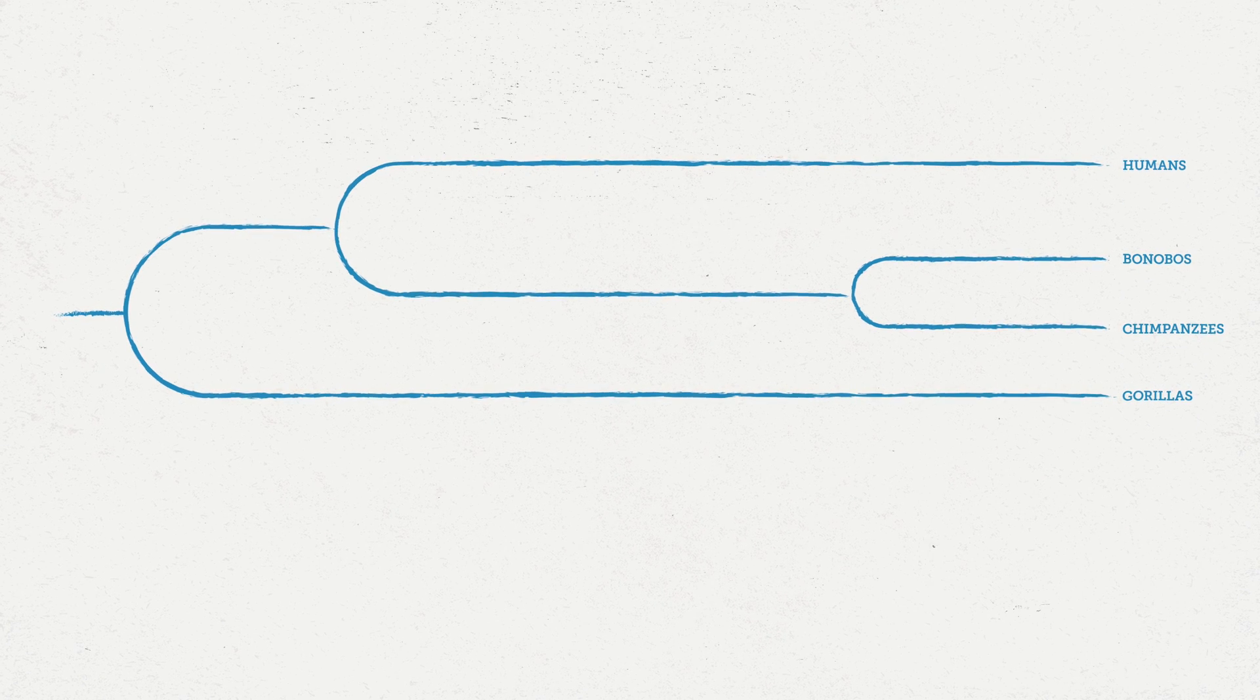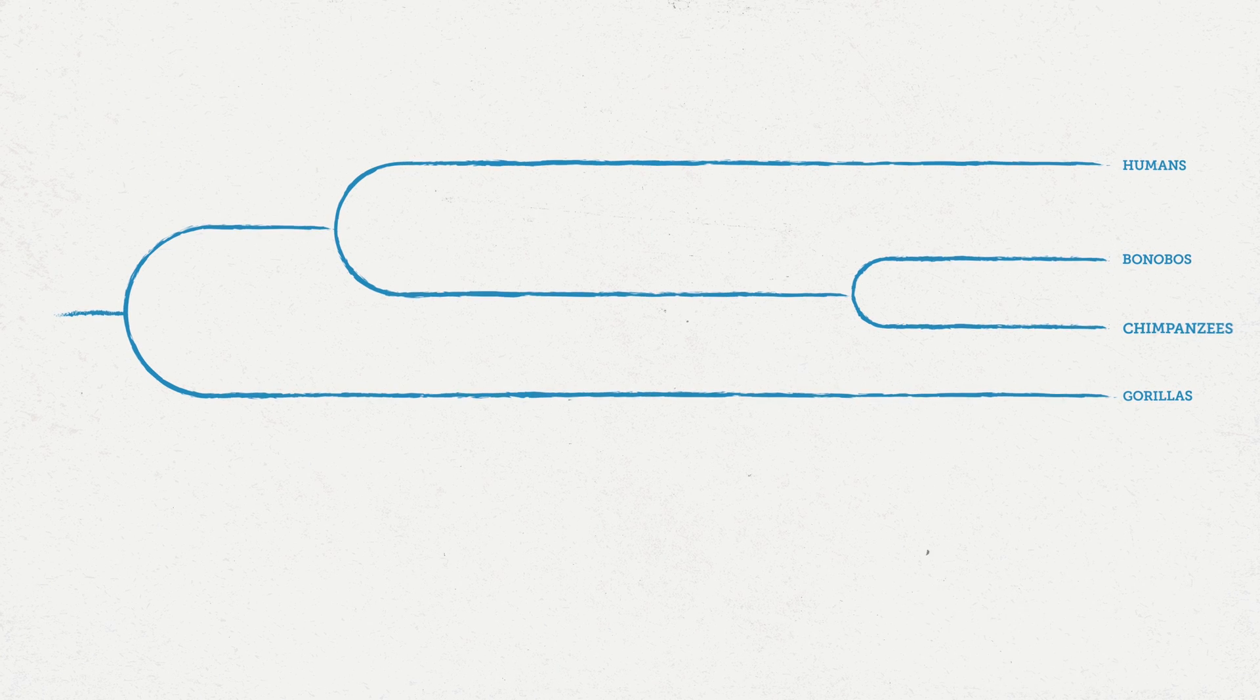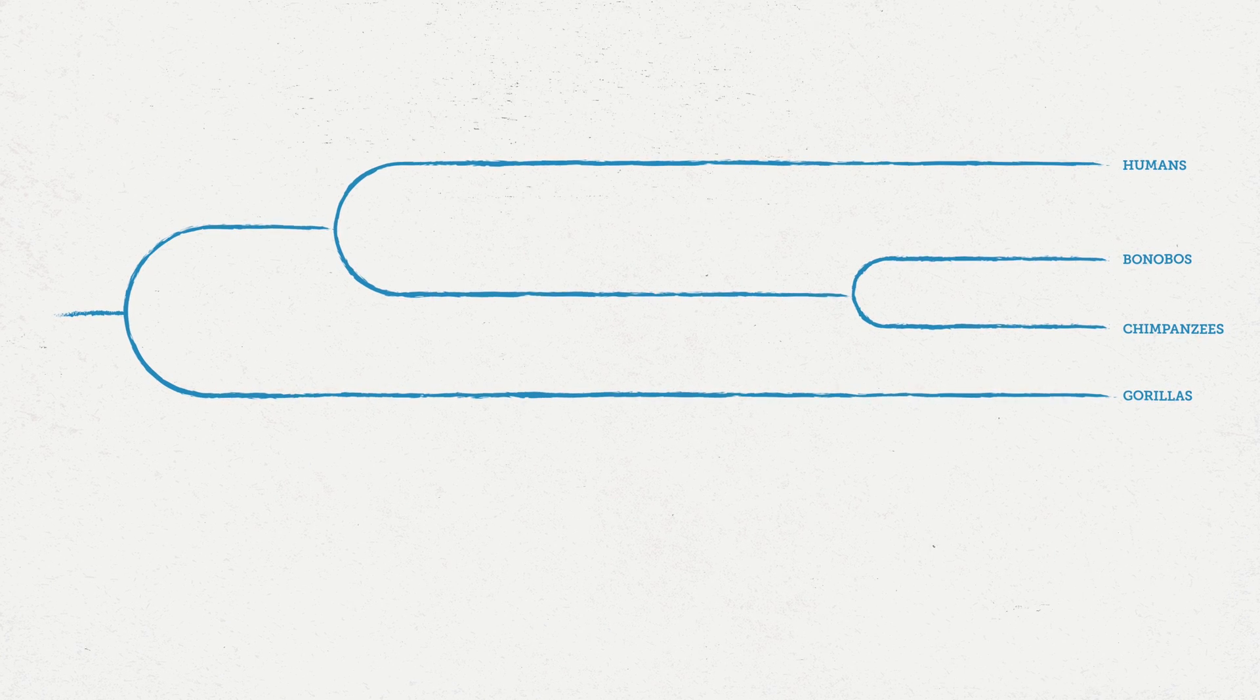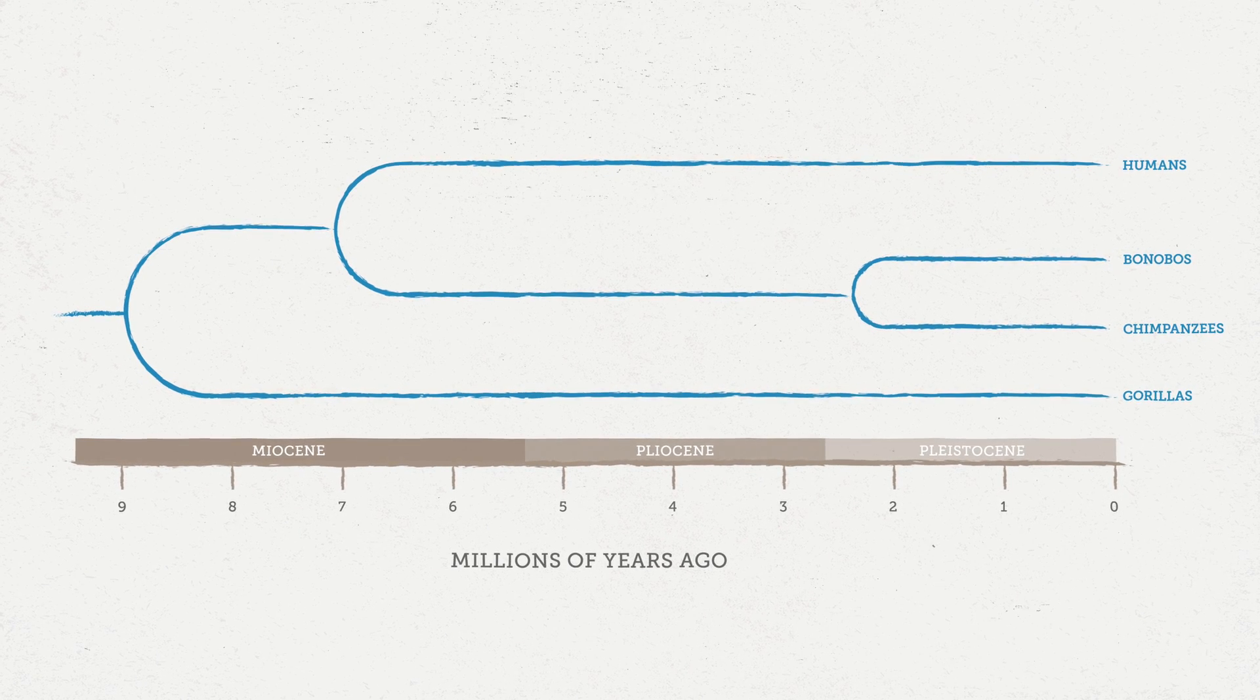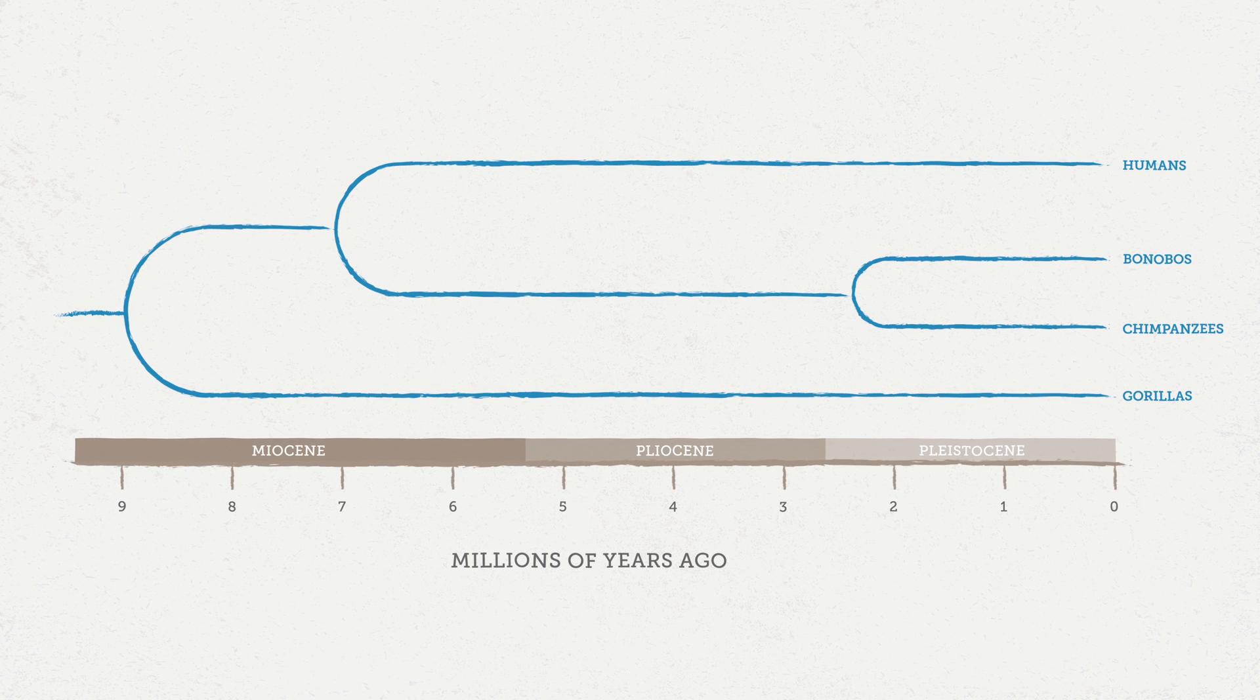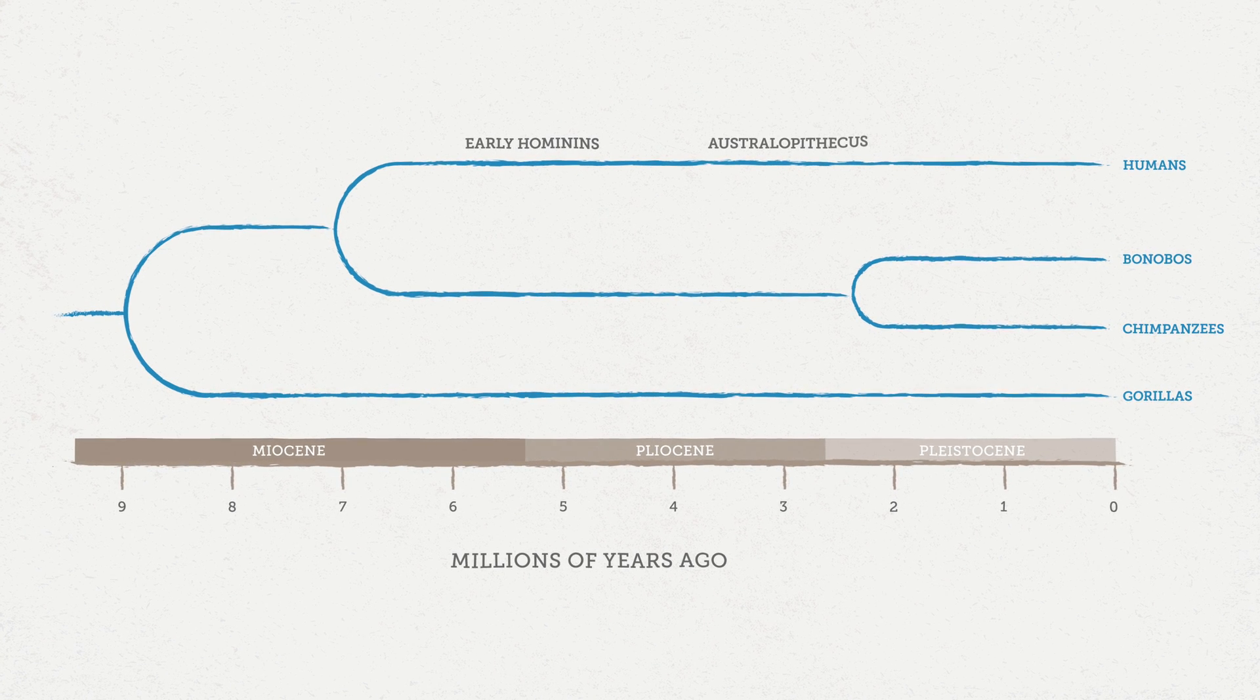So humans are primates. Within primates, we're apes. And within the apes, we're most closely related to chimpanzees and bonobos. So the chimpanzee and bonobo lineage and our lineage split about 7 million years ago in Africa. And when we talk about human evolution, we're often talking about that 7 million year lineage of our evolution after we split from chimps and bonobos. And that 7 million year history of our lineage, I like to think of in terms of three chapters. The earliest hominins, the middle chapter, which belongs to the genus Australopithecus, and then the last chapter, which is our chapter, the genus Homo.